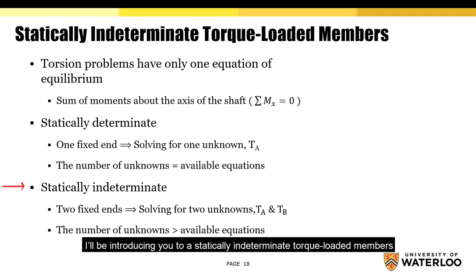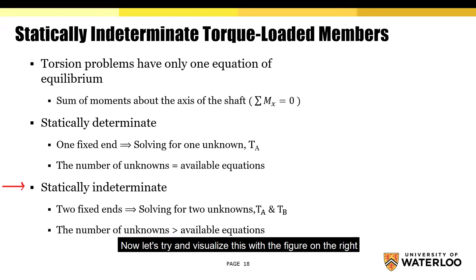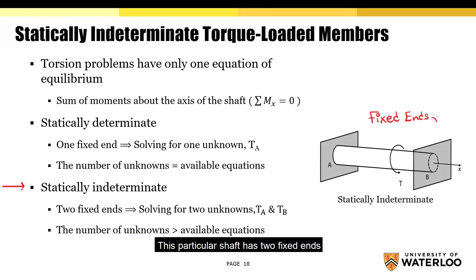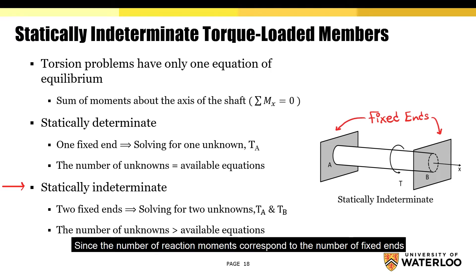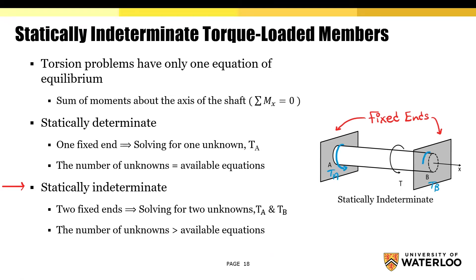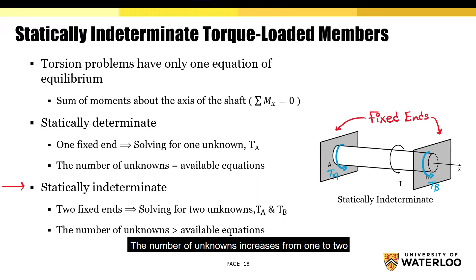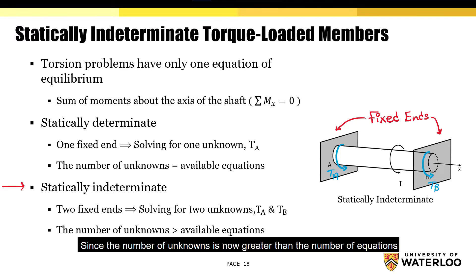Now I'll be introducing you to statically indeterminate torque loaded members. This shaft is only considered to be statically indeterminate if the number of unknowns is greater than the number of equations. This particular shaft has two fixed ends. Since the number of reaction moments corresponds to the number of fixed ends, we will end up with a torque at each end of the shaft. We will label the reaction torques at A and B as TA and TB respectively. I determined the direction of these torques using the right-hand rule, where my thumb is pointing away from the cross section. With the addition of the second fixed end, the number of unknowns increases from 1 to 2, while the number of equations remains the same. Since the number of unknowns is now greater than the number of equations, the shaft is indeed statically indeterminate.